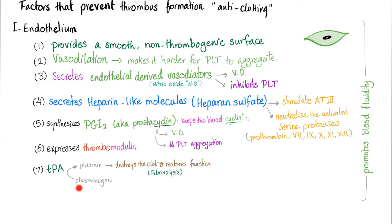Also, tPA converts plasminogen into plasmin. Plasmin destroys the clot and the clotting factors and restores normal function. This is called fibrinolysis. All of these mechanisms promote blood fluidity and inhibit coagulation.